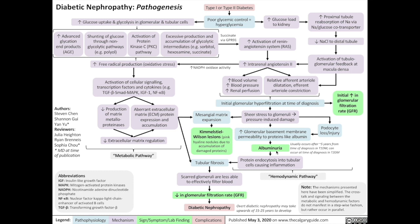Please check out my video on nephrotic syndrome for more about its pathogenesis and clinical findings. Nephrotic syndrome features such as albuminuria typically occur after five years from time of diagnosis in type 1 diabetes, and can occur at the time of diagnosis in type 2 diabetes. Simultaneously, proteins in the tubules will be absorbed into tubular cells by endocytosis, causing inflammation and subsequent tubular fibrosis. That results in scarred glomeruli, less able to effectively filter blood, resulting in a reduced glomerular filtration rate over time, and consequently diabetic nephropathy.